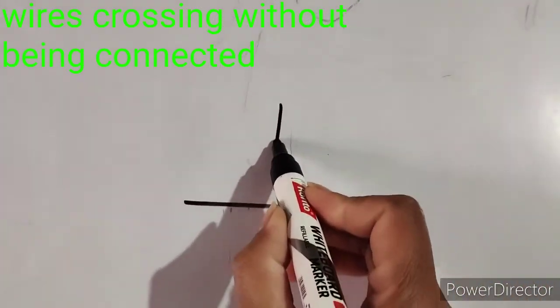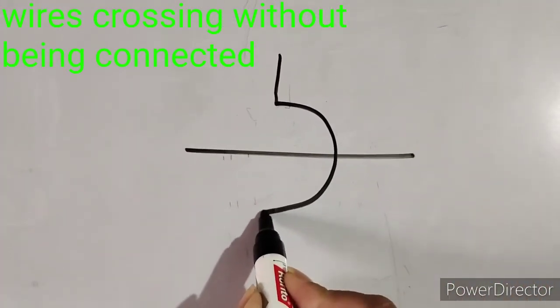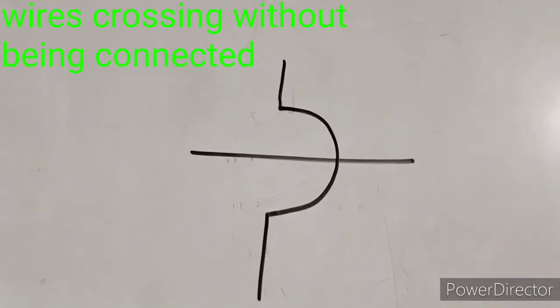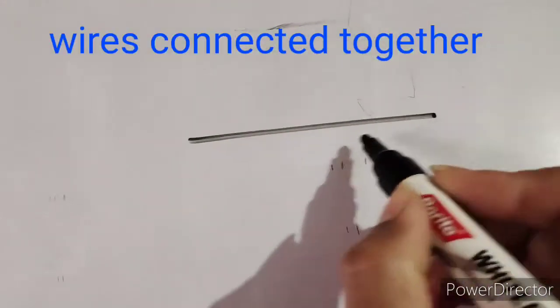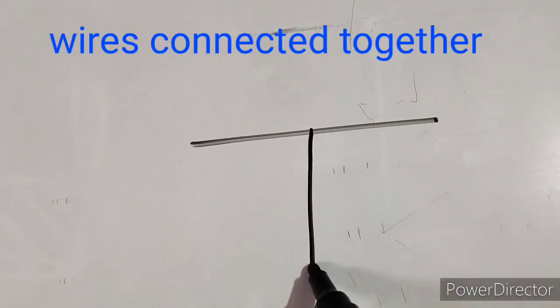This is the symbol of wires when they are crossing without any connection. This is the symbol when wires are connected.